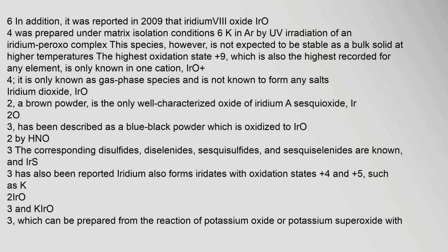The highest oxidation state 9, which is also the highest recorded for any element, is only known in one cation, IrO4+. It is only known as a gas phase species and is not known to form any salts. Iridium dioxide, IrO2, a brown powder, is the only well-characterized oxide of iridium. A sesquioxide, Ir2O3, has been described as a blue-black powder which is oxidized to IrO2 by HNO3. The corresponding disulfides, diselenides, sesquisulfides, and sesquiselenides are known, and IrS3 has also been reported.